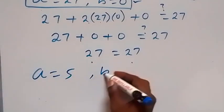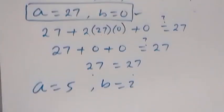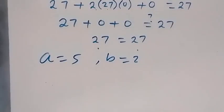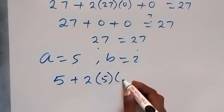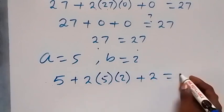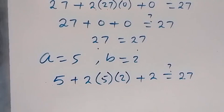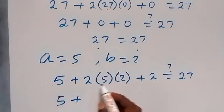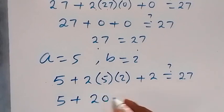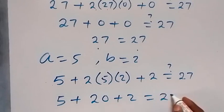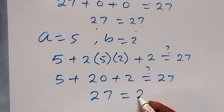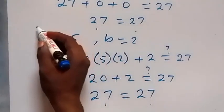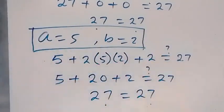For the second solution, when a equals 5 and b equals 2, substituting into a plus 2ab plus b equals 27 gives 5 plus 2 times 5 times 2 plus 2. That's 5 plus 20 plus 2, which equals 27. Left-hand side equals right-hand side, confirming a equals 5 and b equals 2 also satisfies the equation.